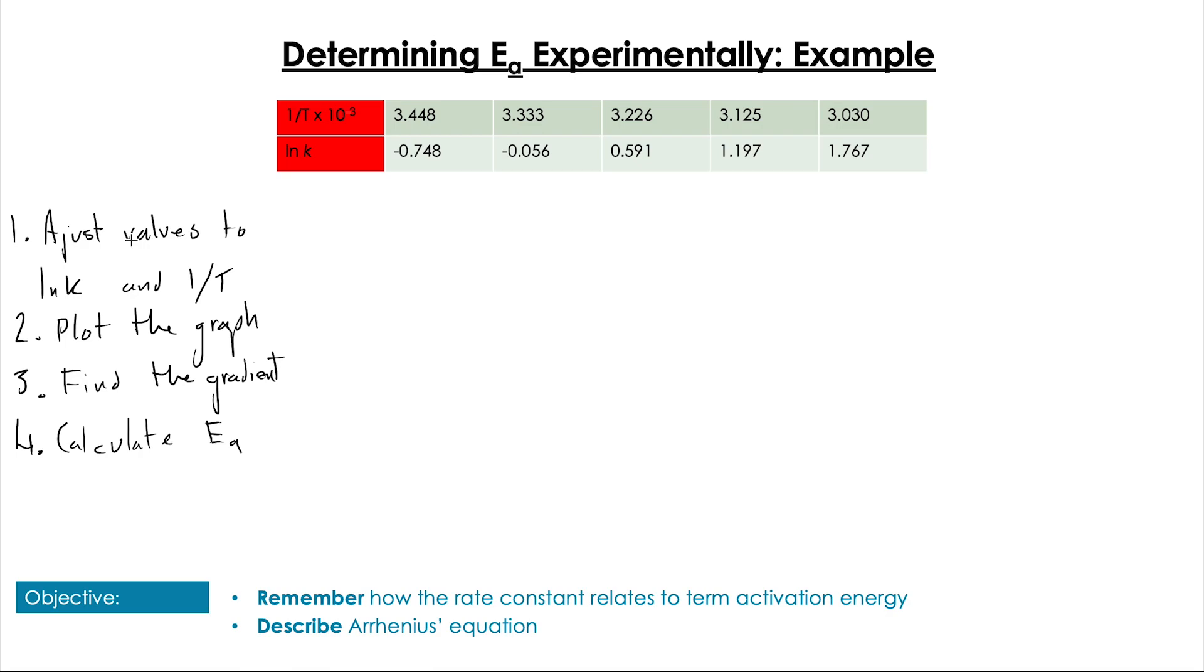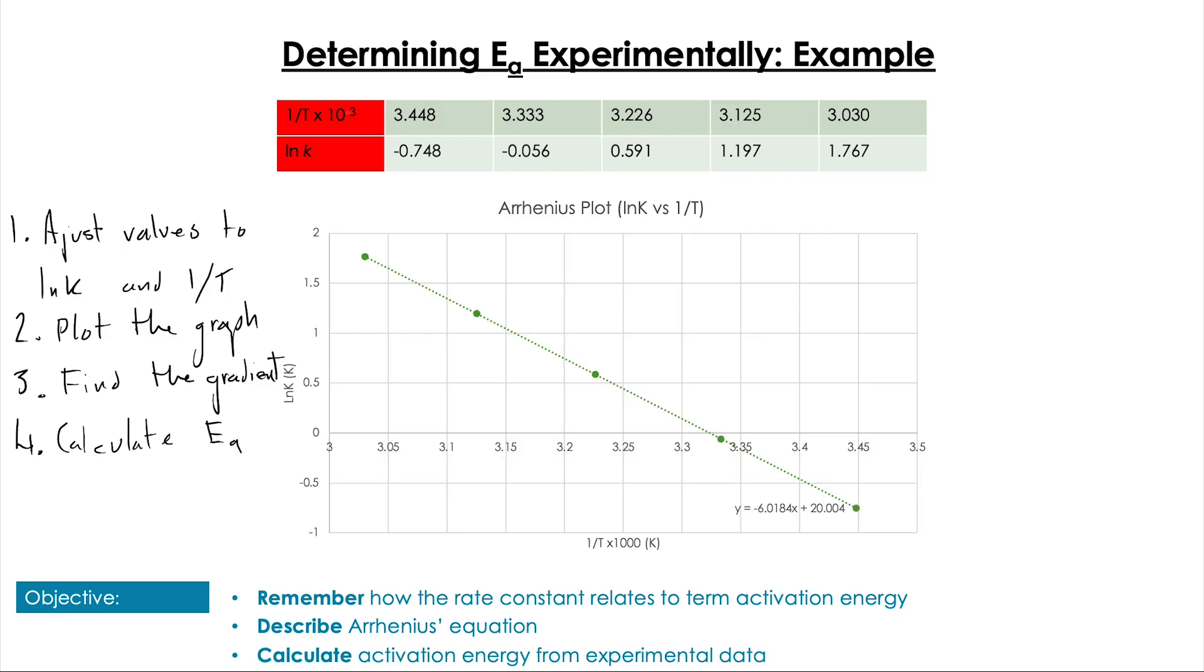Taking that data and processing it on Excel, I was able to produce a graph that looked like this. One thing to bear in mind is I've kept the times 10 to the power 3 on the 1 over T just to make the graph look a little nicer, but I'll show you how to alter that in the processing.